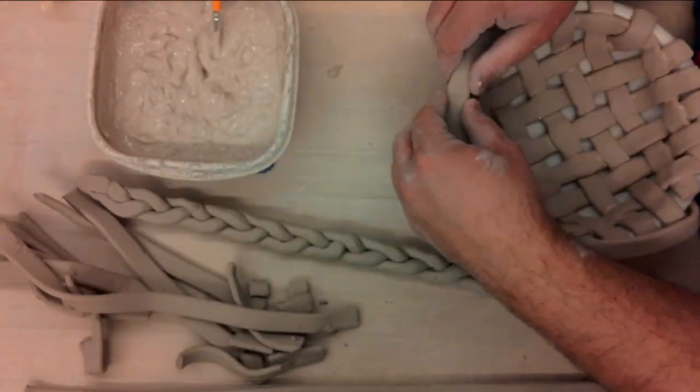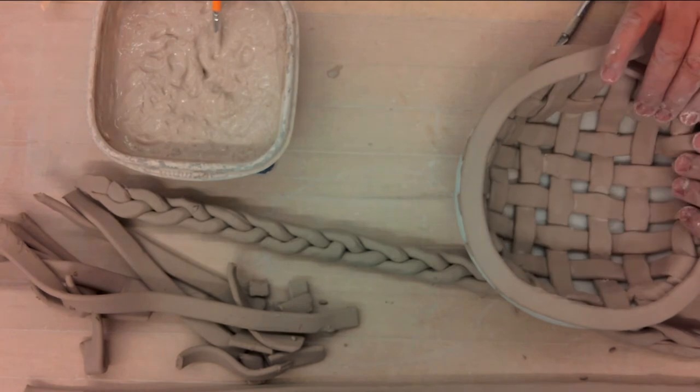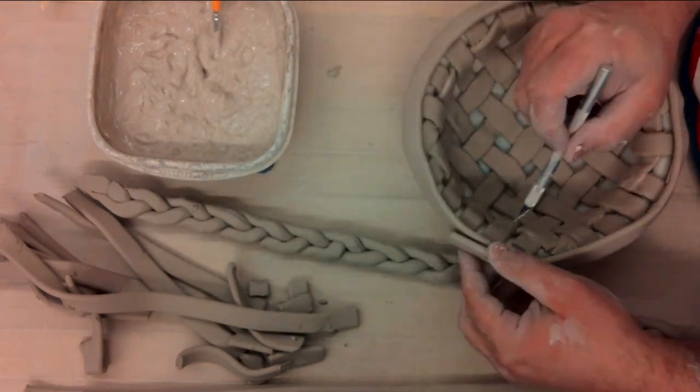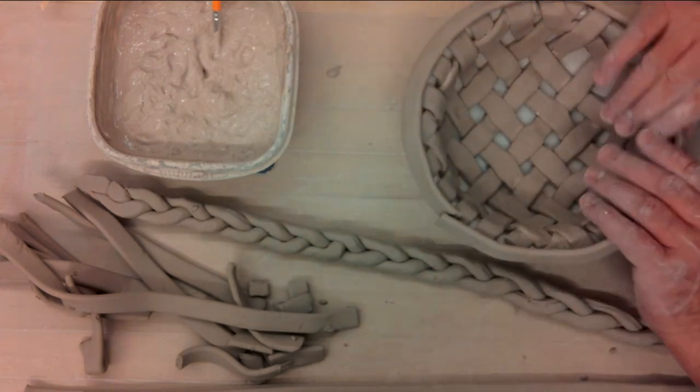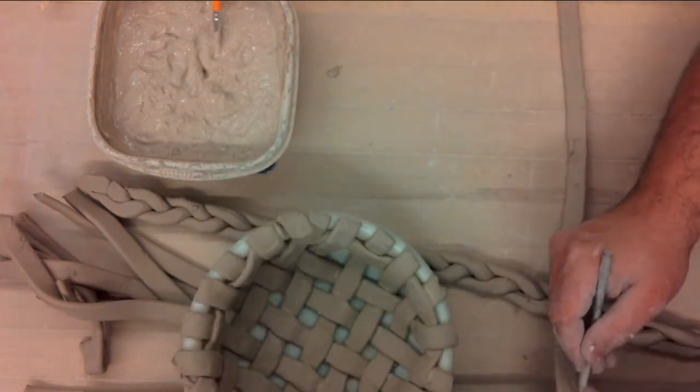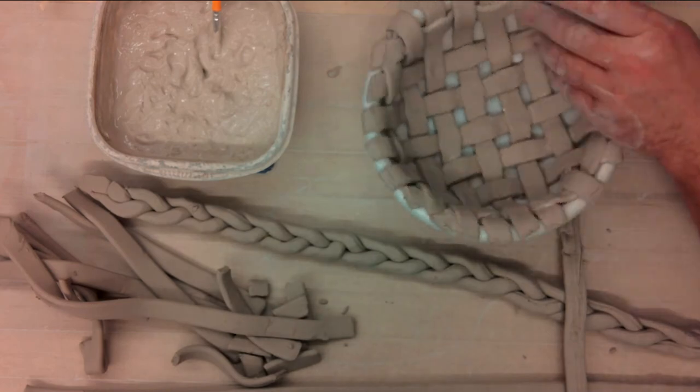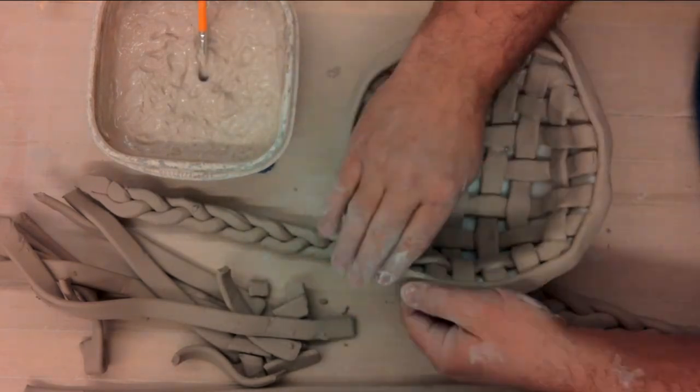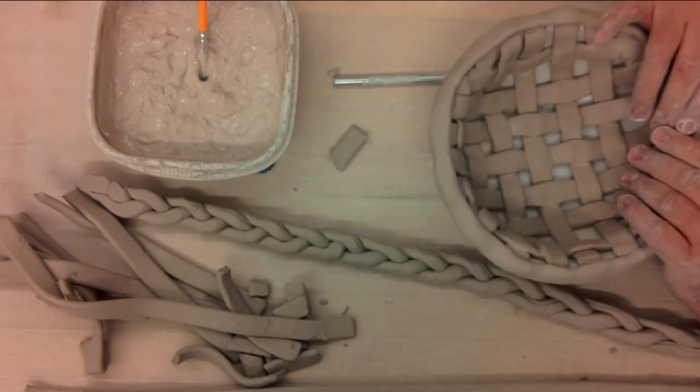Now what I'm going to do is start making an edge for the bowl. I just want to line it up here, see if it'll fit, if I've got enough. It is a little too much. I'm just going to trim it off. Now I'm going to score and slip both sides and attach it.